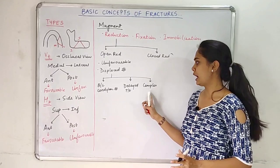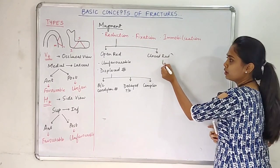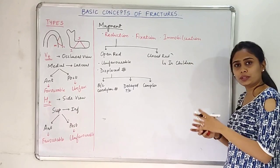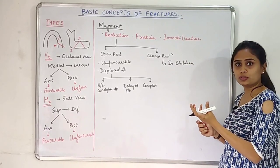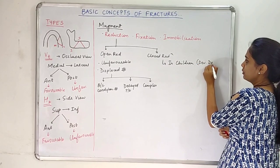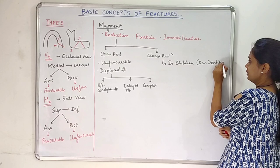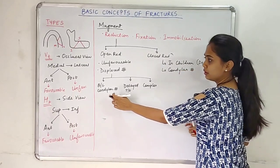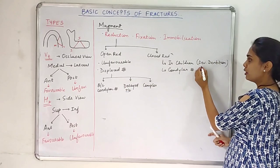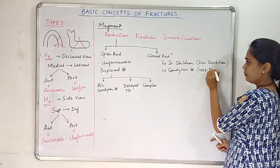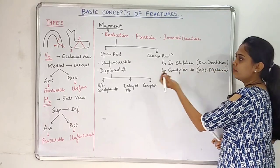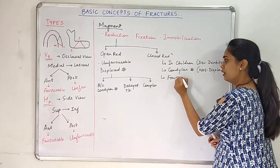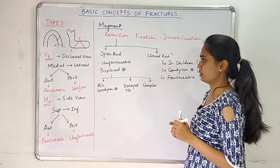Closed reduction is indicated when we have children with developing dentition, because opening the site might disturb the developing tooth buds. Second, when there is a condylar fracture that is non-displaced. Third, when the fracture is favorable — we don't need to expose the site and can manage with closed reduction.